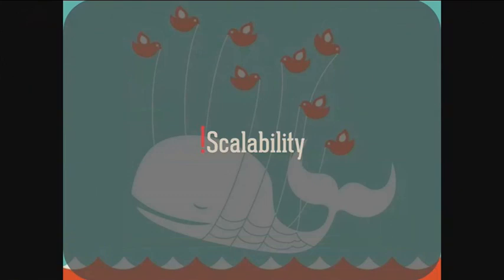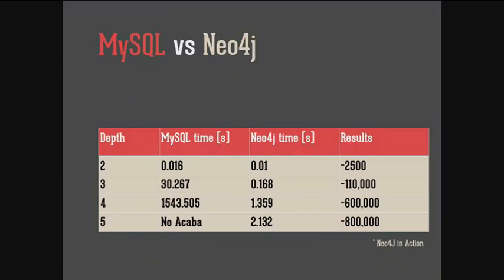Some guys — the Neo4j in Action authors — ran an experiment to compare the performance between MySQL and Neo4j in a highly connected environment. They modeled a social network domain with users following each other, storing around a million users and many relationships. They wanted to know: give me the friends of my friends, up to a depth of five.